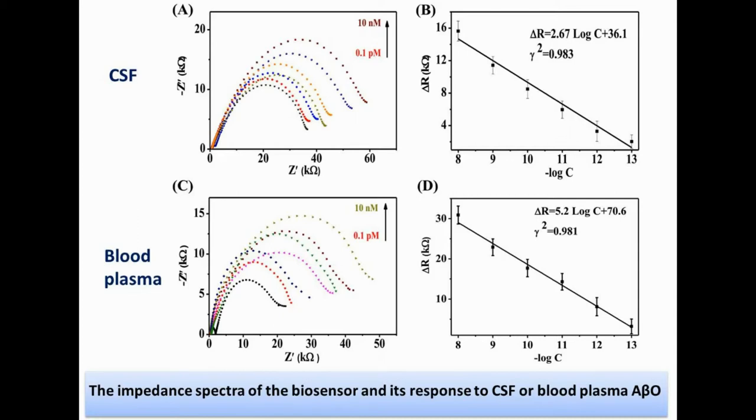The detection limit reaches 0.1 picomolar A-beta oligomer in artificial cerebrospinal fluid or blood plasma. It could be used as a new tool for early diagnosis of Alzheimer's disease.